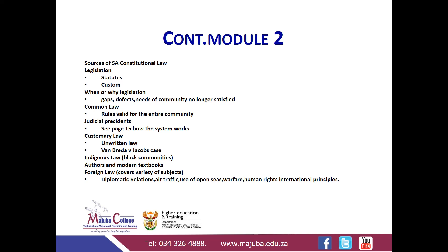Then we come to customary law — it is also unwritten law. If you want to prove the existence of customary law or use it, you must first prove it. In the case of Van Breda versus Jacobs, the court decided that the custom must have been long established, it must be reasonable, it must have been constantly observed, and it must be definite. You'll find the facts of that case in your book on page 15.